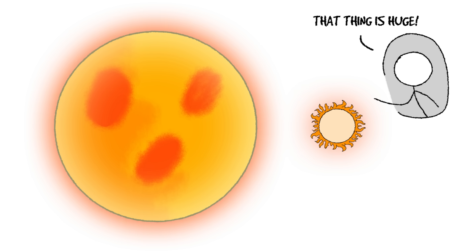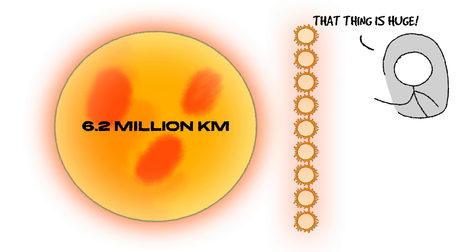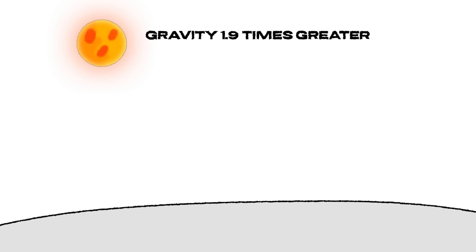Alright, let's go bigger. Meet Pollux, an orange giant that's twice as massive as our sun. Now we're talking. With a radius of 6.2 million kilometers, Pollux is nearly 9 times larger than our sun. Its mass, however, is 1.9 times greater, which would make it slightly more gravitationally intense. Its temperature sits at 4,660 degrees Celsius, meaning it's a bit cooler than our sun but still warm enough to sustain life.